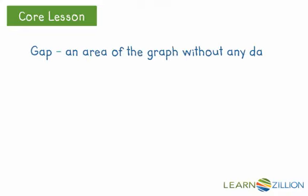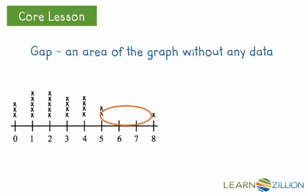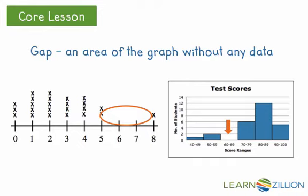A gap is an area of the graph without any data. See on our dot plot, there is a gap between 5 and 8. And on the histogram, there is a gap between 60 to 69.